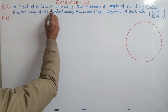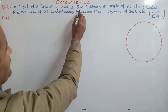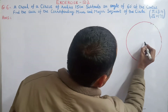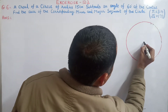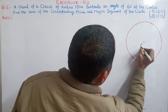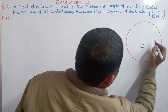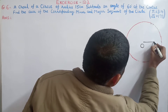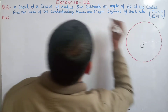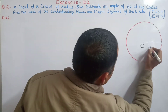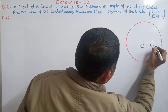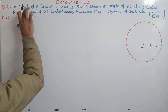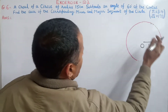A chord of a circle of radius 15 cm. Here we have a circle, this is the center point O. We will make the radius, which is 15 cm. And now we have to make a chord — this chord subtends a 60 degree angle.